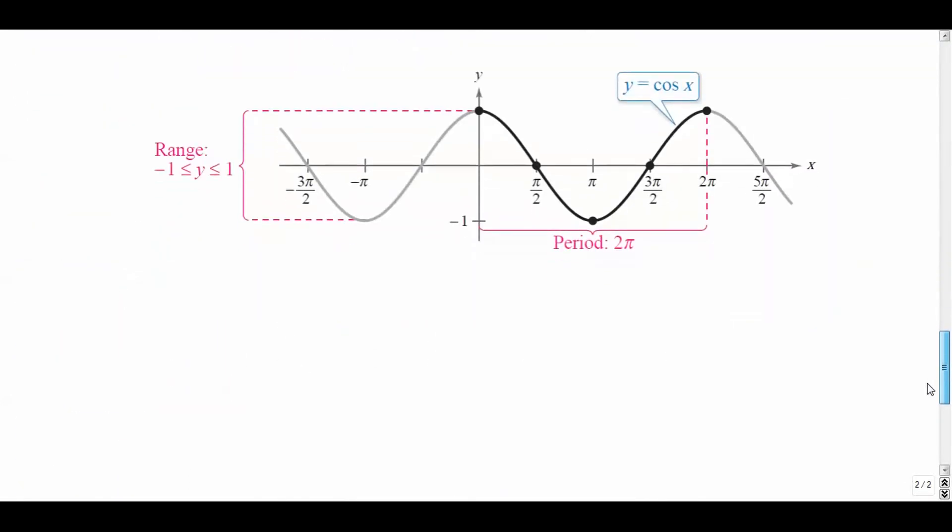And if you want to look at sort of a nicer looking graph, you can see it right here, right? The period is two pi. That's how long it takes to keep repeating itself. The range is the up and down direction of the graph. It keeps bouncing back and forth between negative one and one.